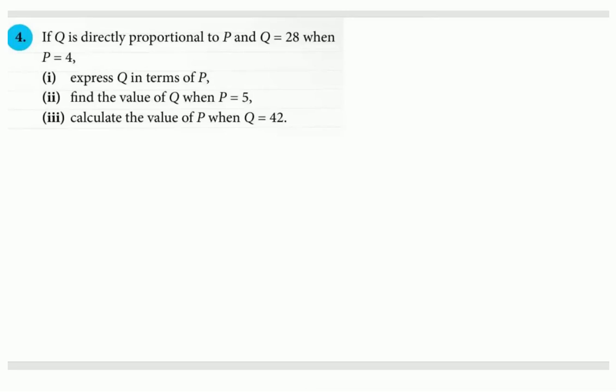If Q is directly proportional to P and Q equals 28 when P is 4, part 1: express Q in terms of P, part 2: find the value of Q when P is 5, and part 3: calculate the value of P when Q is 42.